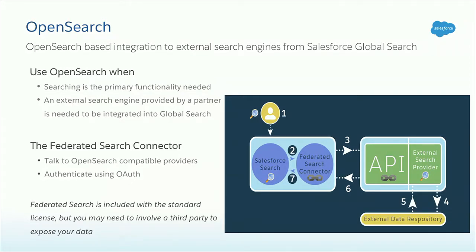One important thing: the Federated Search Connector can authenticate on behalf of the user to the external system — we leverage the OAuth protocol there. So when searching in step four, I'm searching with my own credentials; we are not exposing data that I'm not allowed to see. This is super important for some sources. The Federated Search Connector is included in the standard Salesforce license, so you can configure as many as you want. If you rely on an external search engine from one of our partners, you'll need a license from that technology, but you can create as many connectors as you want.